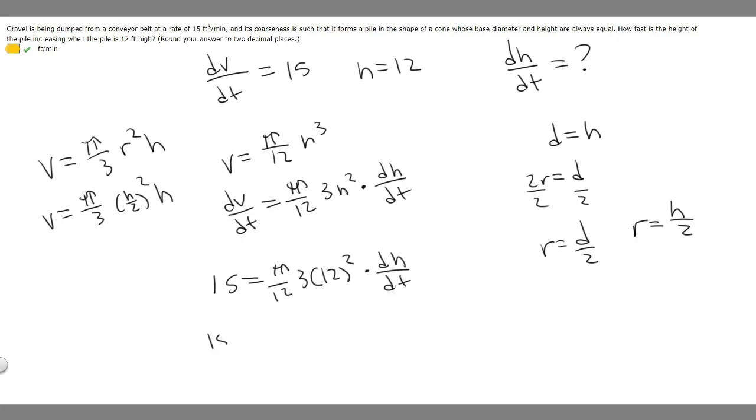We know that 15 equals, let's solve this. 12² is 144. If we multiply by 3, it becomes 432. If we multiply by π, it becomes 432π/12, and then we multiply by dh/dt.